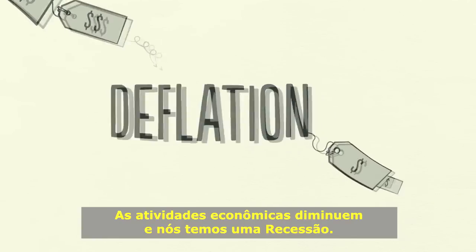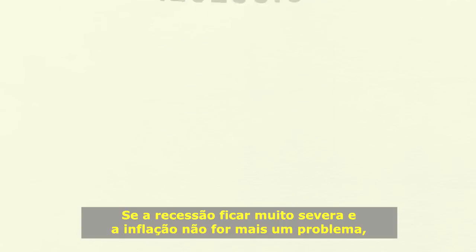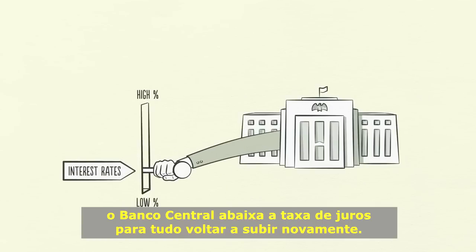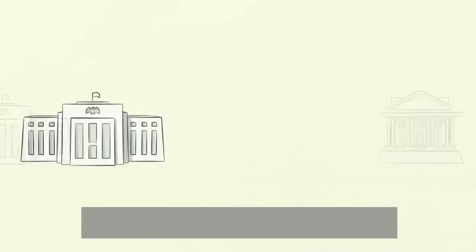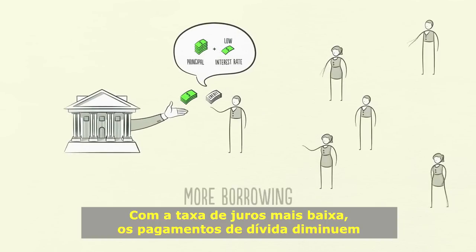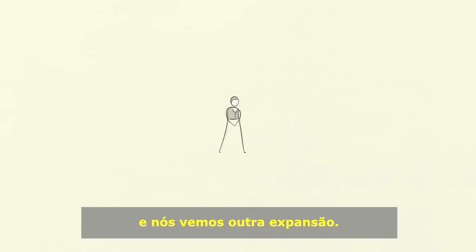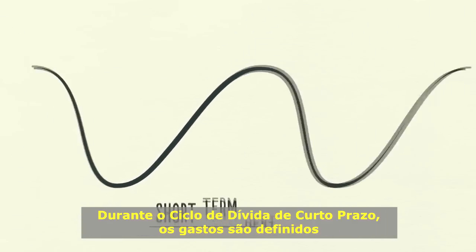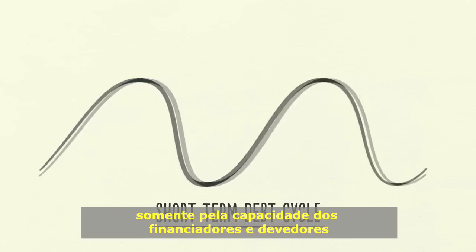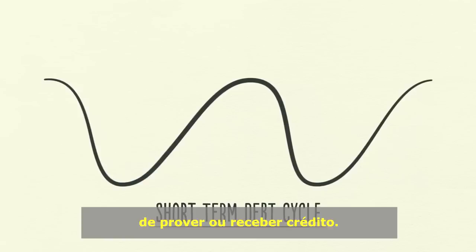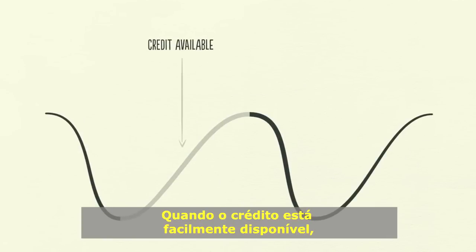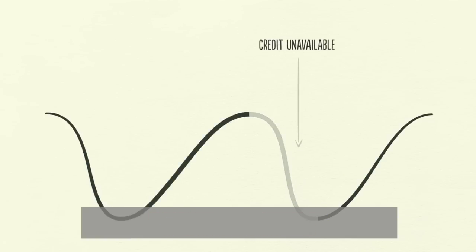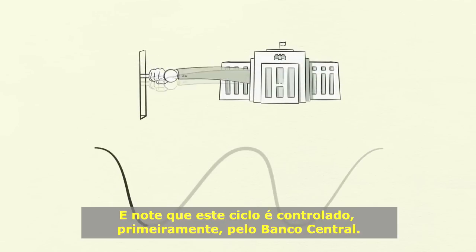Economic activity decreases, and we have a recession. If the recession becomes too severe and inflation is no longer a problem, the central bank will lower interest rates to cause everything to pick up again. With low interest rates, debt repayments are reduced, and borrowing and spending pick up, and we see another expansion. In the short-term debt cycle, spending is constrained only by the willingness of lenders and borrowers to provide and receive credit. When credit is easily available, there's an economic expansion; when credit isn't easily available, there's a recession. This cycle is controlled primarily by the central bank and typically lasts five to eight years.